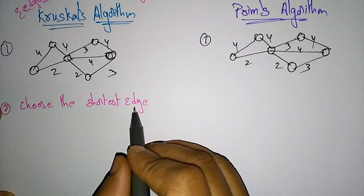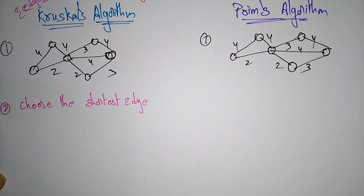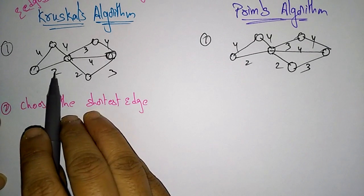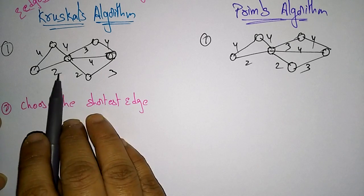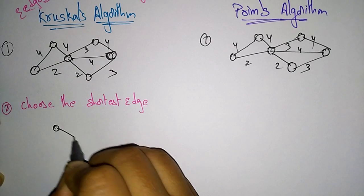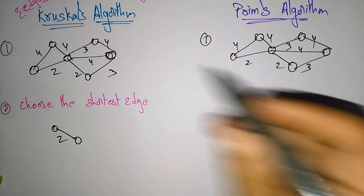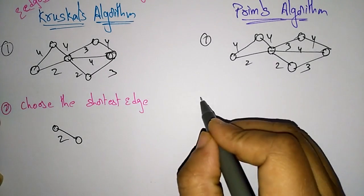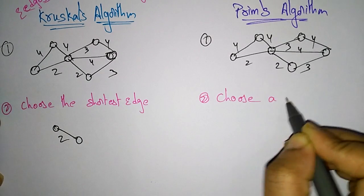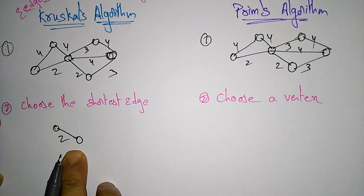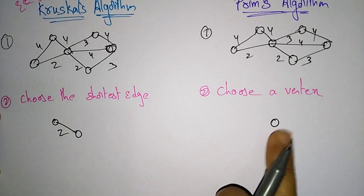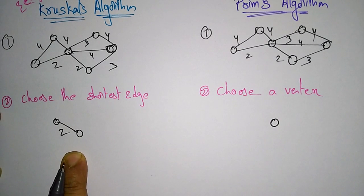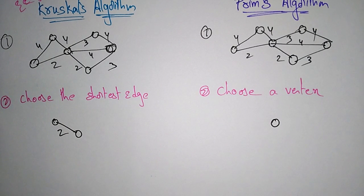Here you have to choose the shortest edge. If you are having two edges with the same value, you can select any one. So I select edge 1-2. In the Prim's algorithm, you have to choose a vertex first, whereas in Kruskal's you choose an edge and move to the next step.